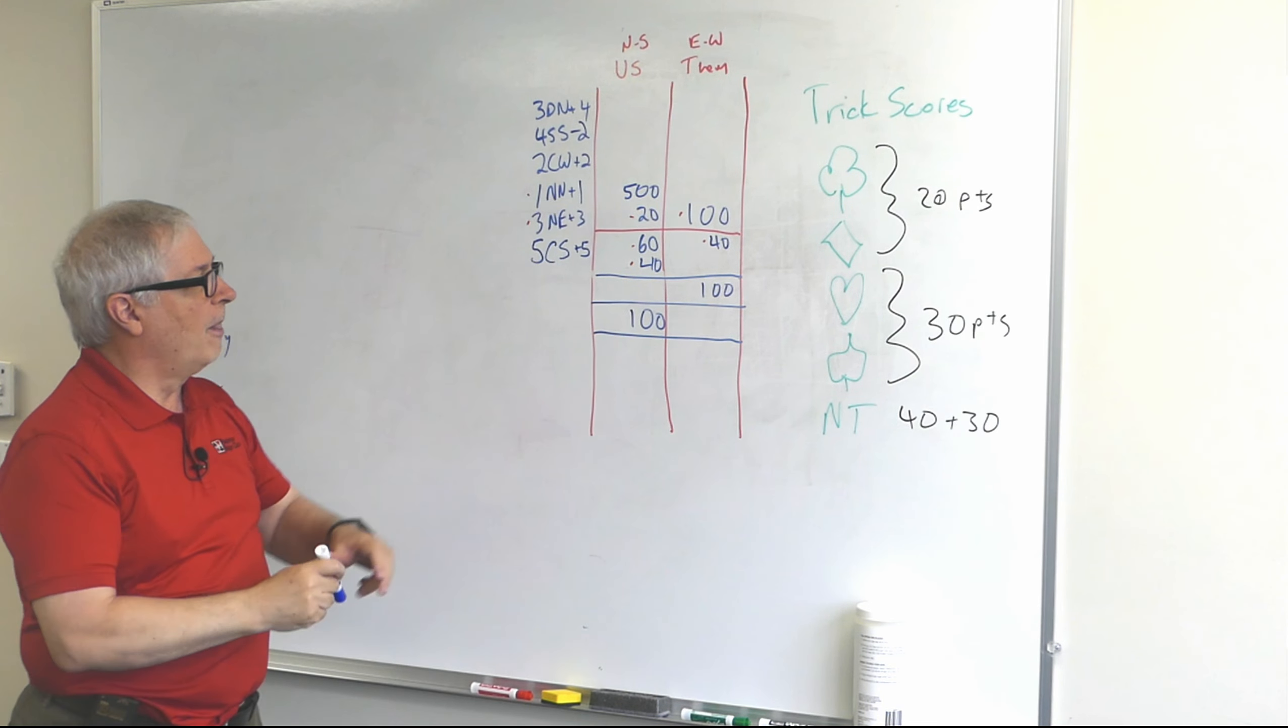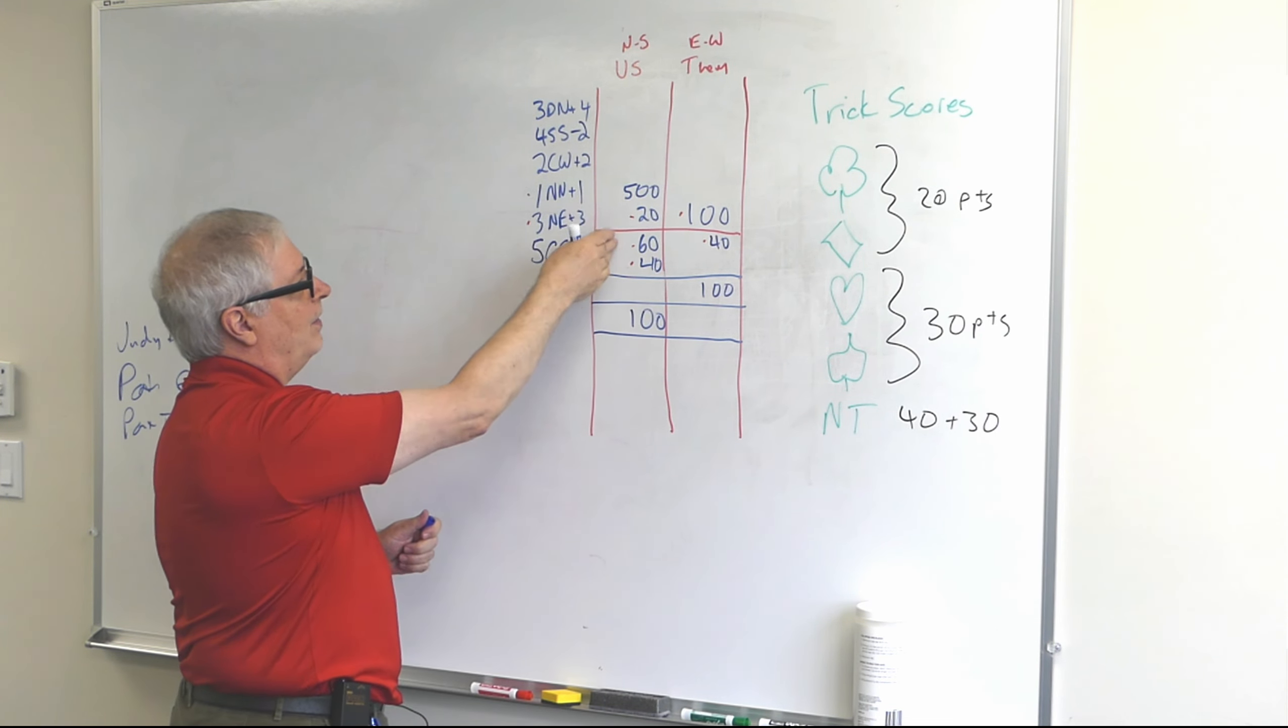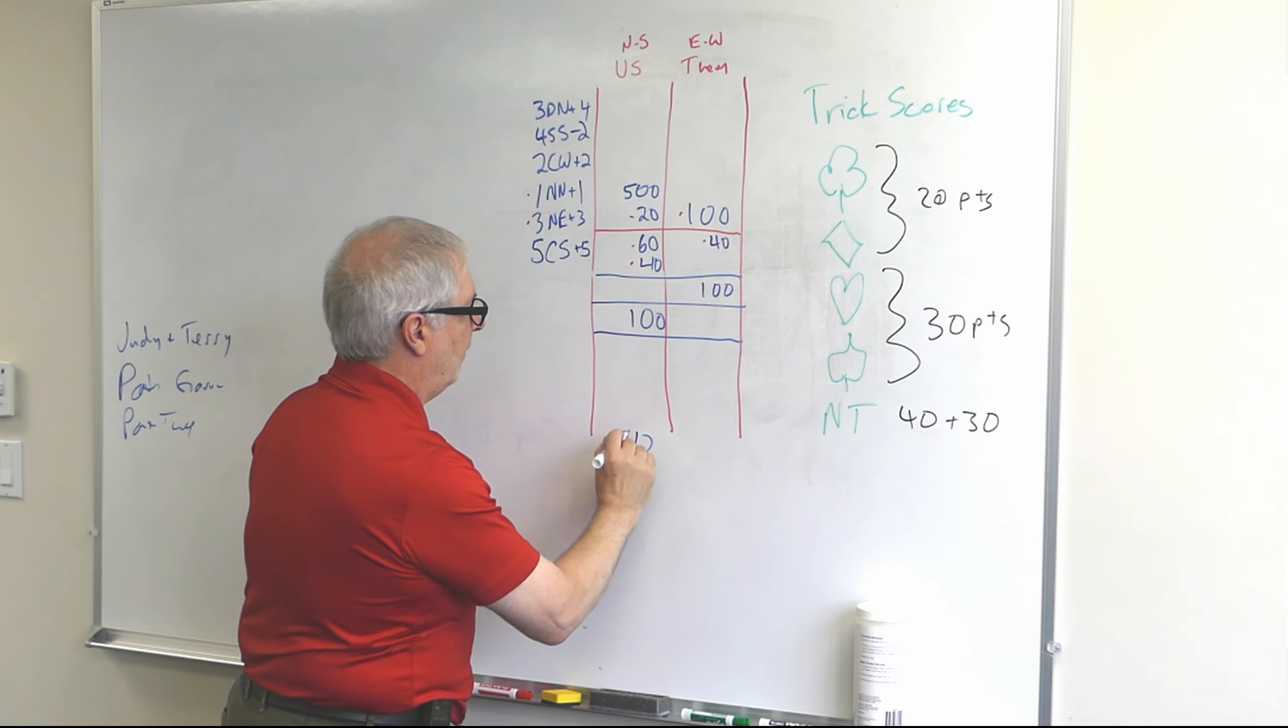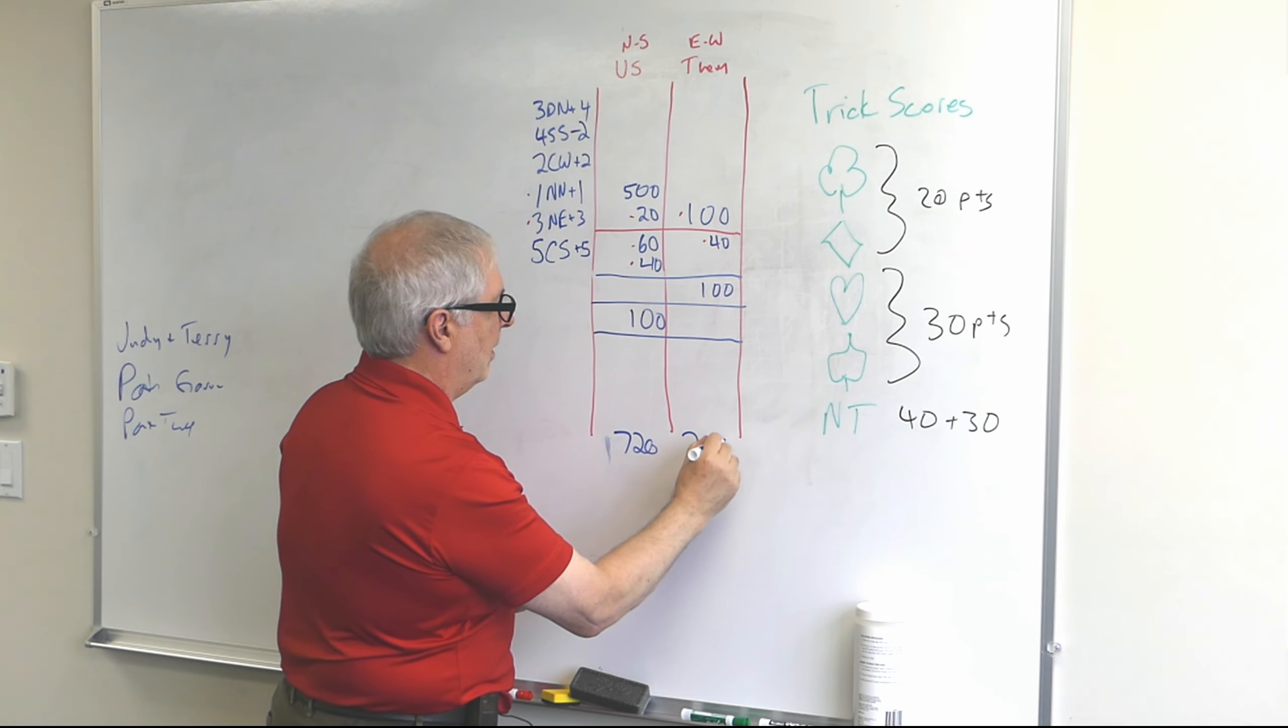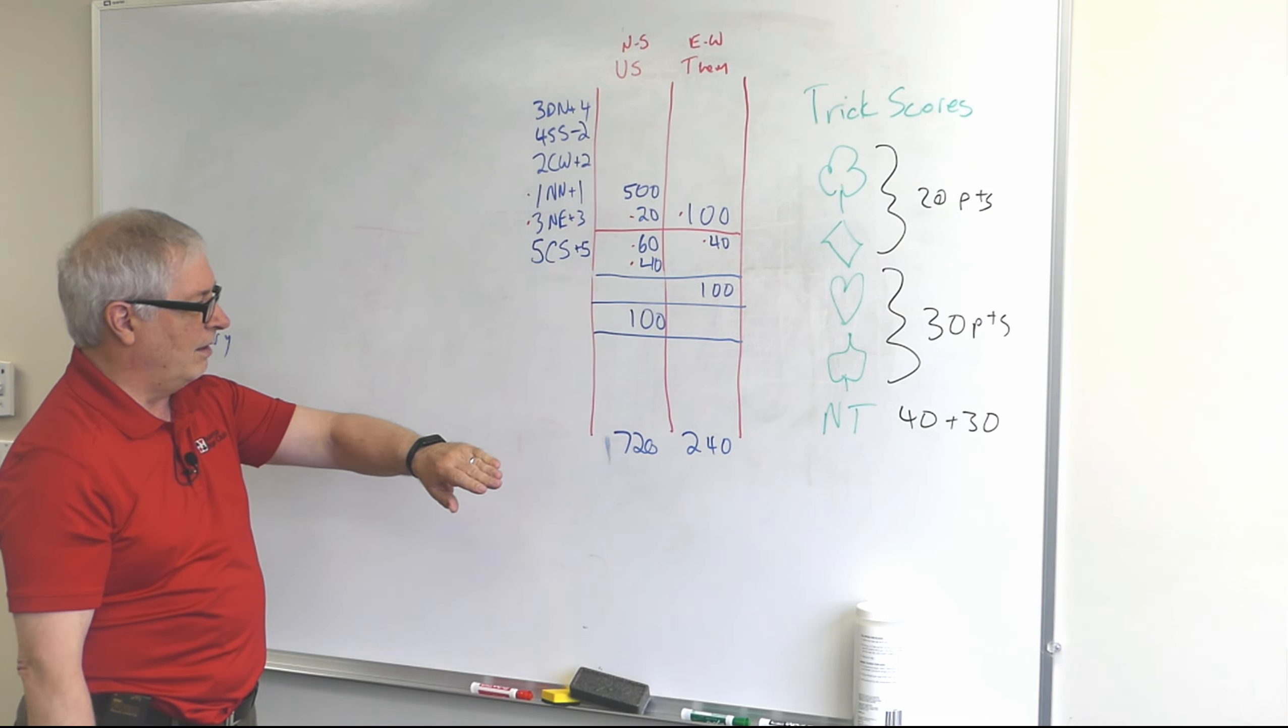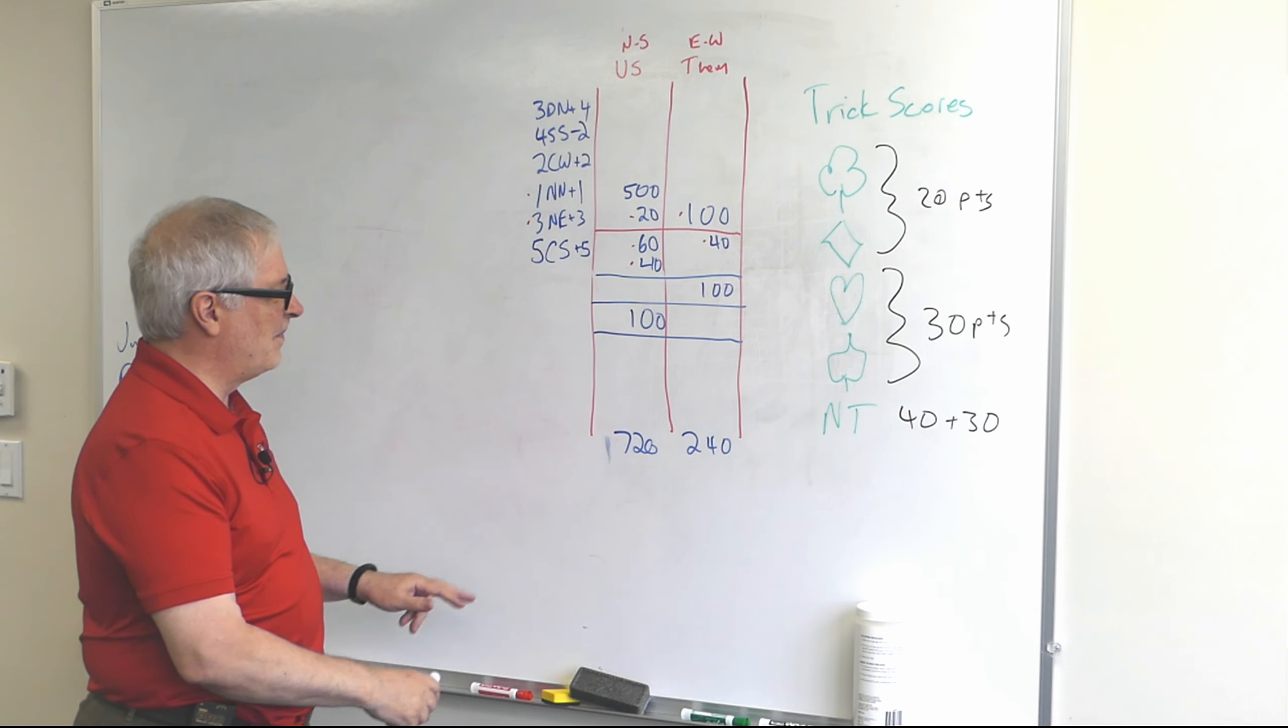It goes up here. But basically now you total up the points in both columns and you get our points. Let's see, 500, 600, 700, 720. Let me do it this way - 720 for us. And 240 for them. So if you're playing a penny a point, they're going to pay up 480 pennies, four dollars and 80 cents.